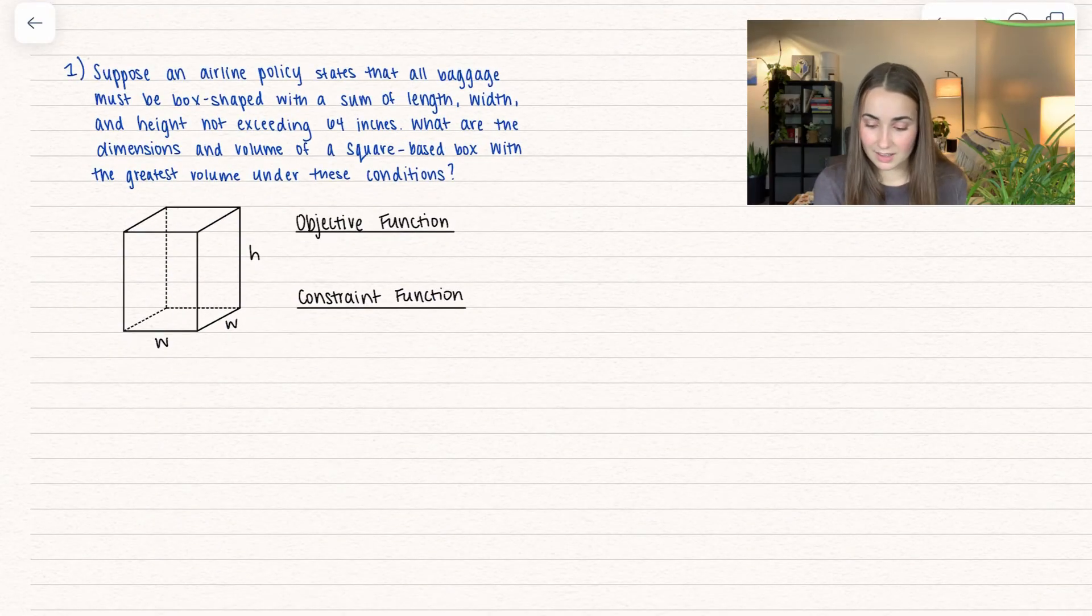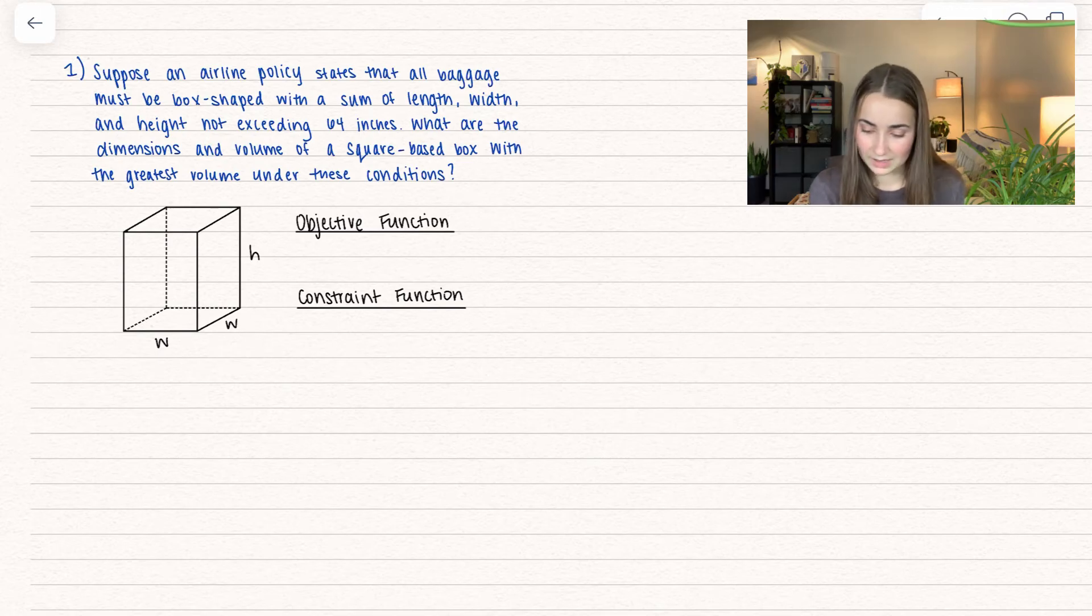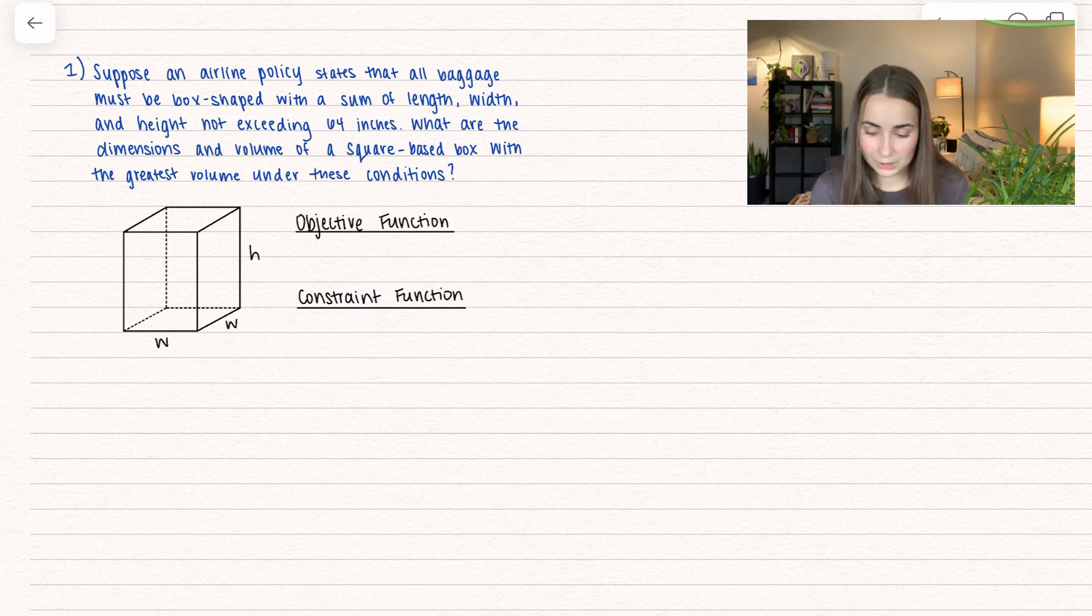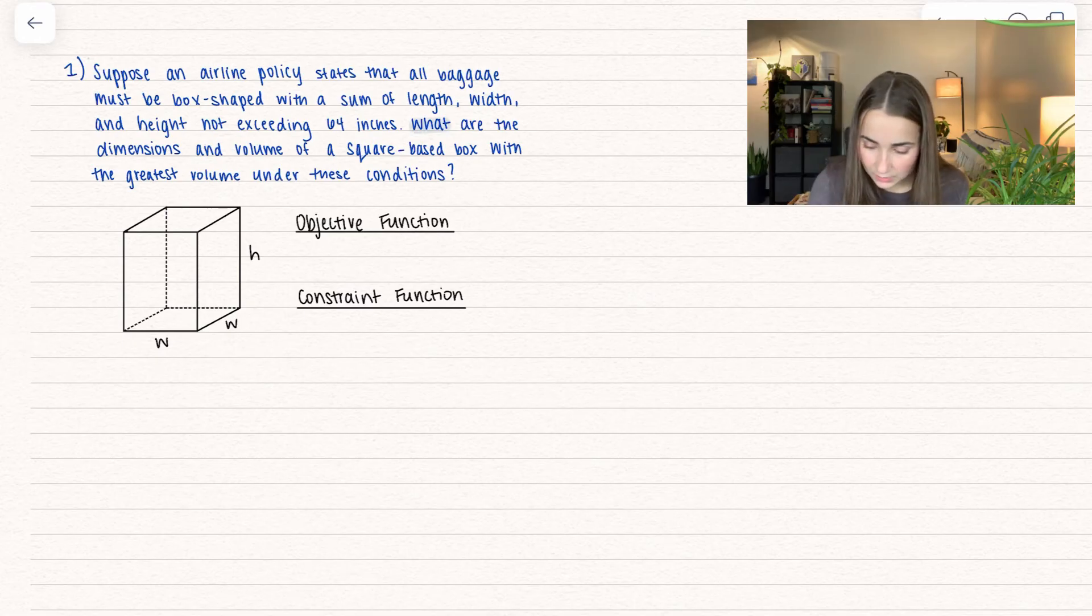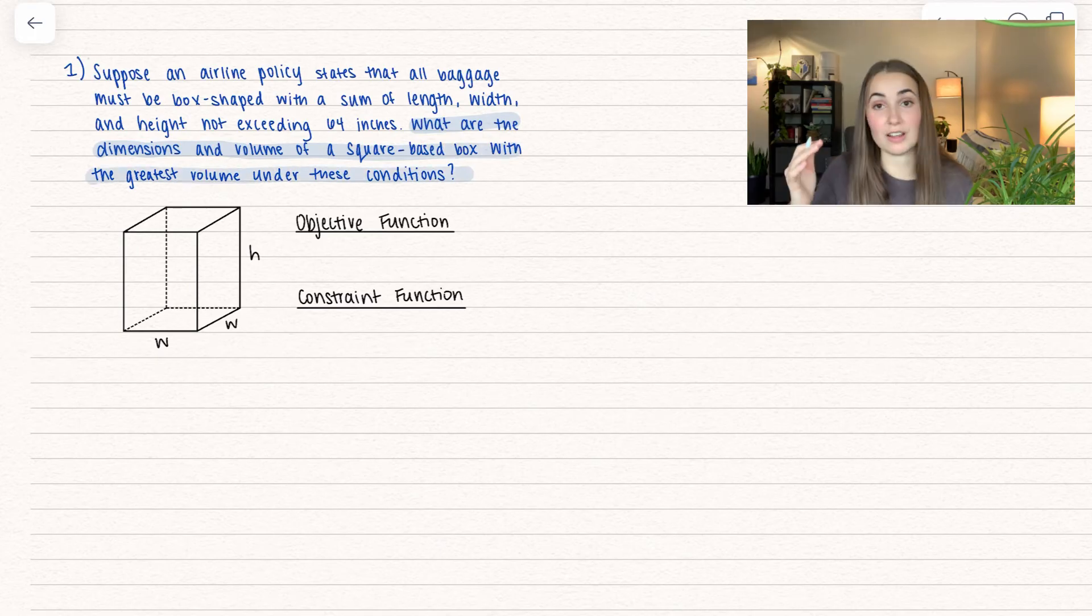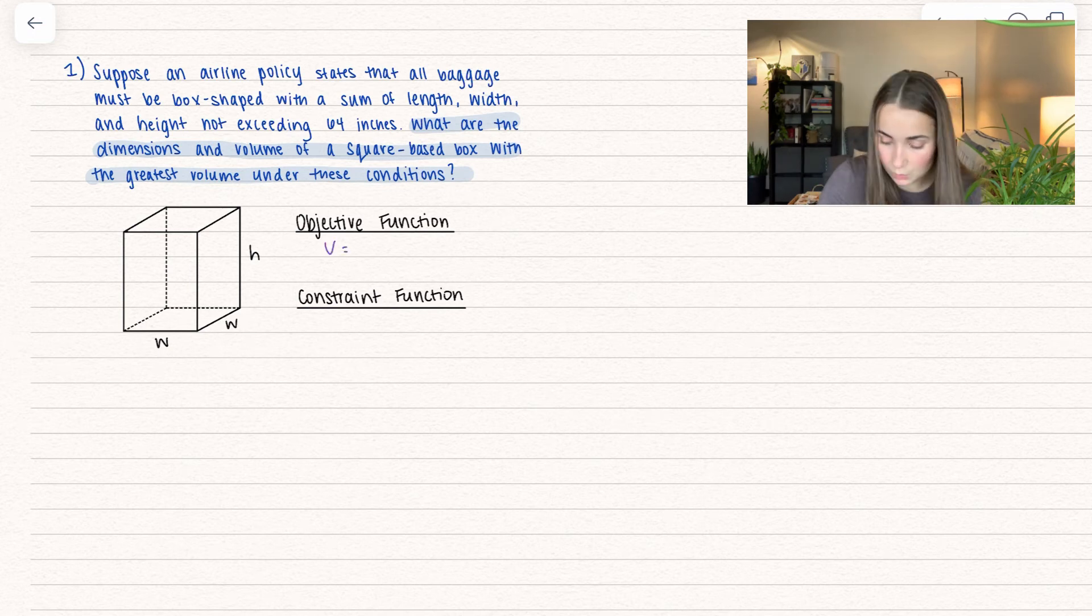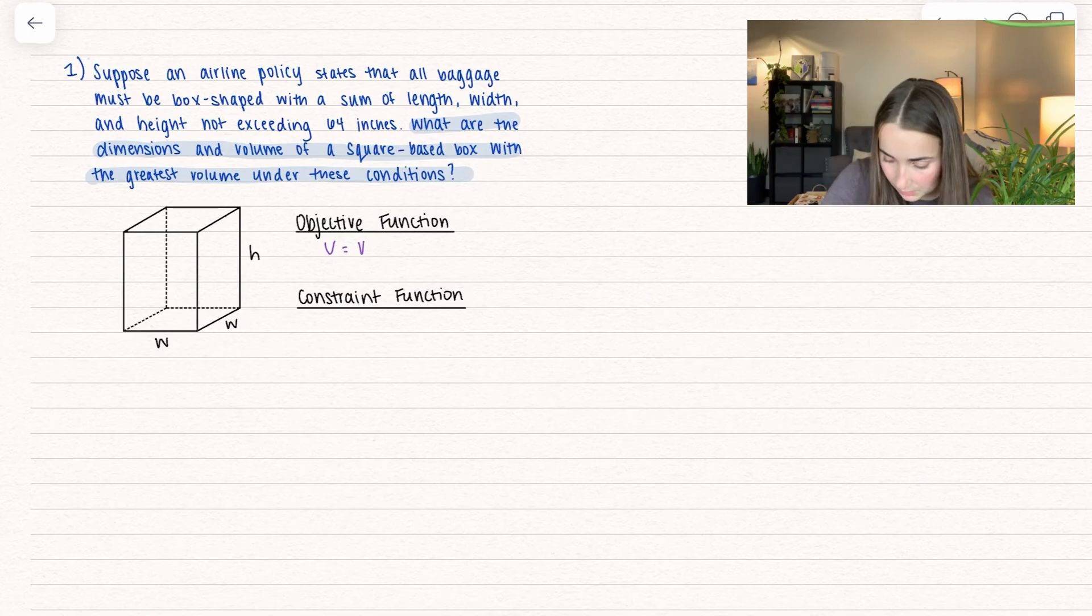Suppose an airline policy states that all baggage must be box shaped with a sum of length, width, and height not exceeding 64 inches. What are the dimensions and volume of a square-based box with the greatest volume under these conditions? This one came with a drawing already, so we don't need to worry about drawing it. This is a square-based box, which means the width and length are the same. I have them labeled as width and width, and then we have the height.